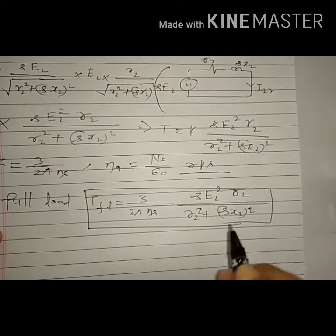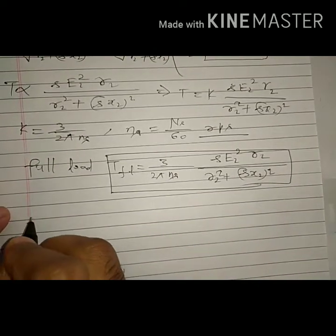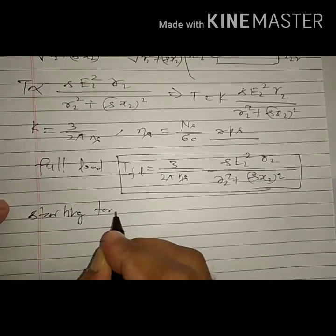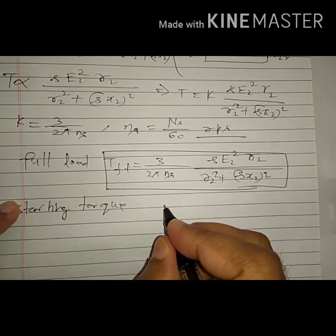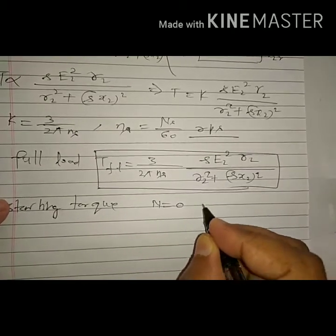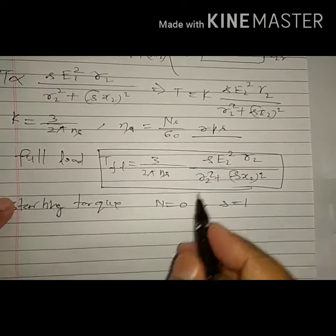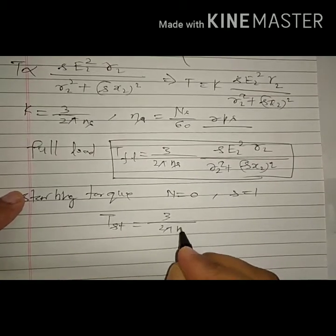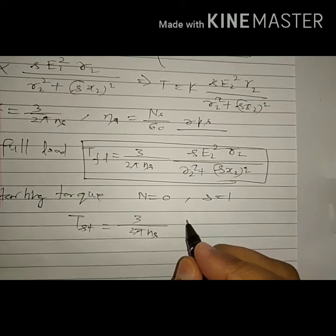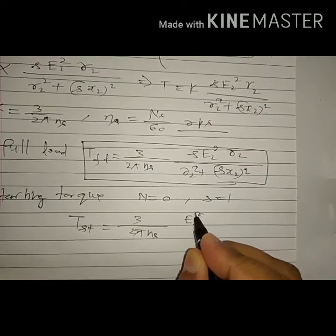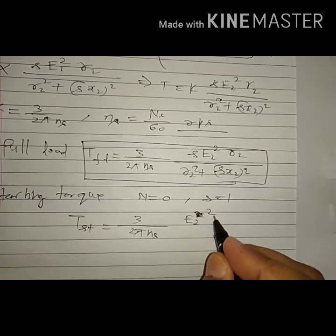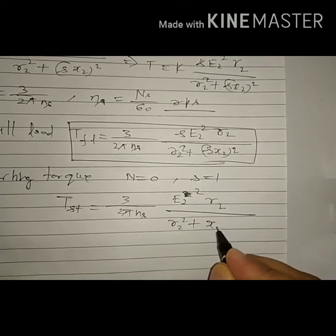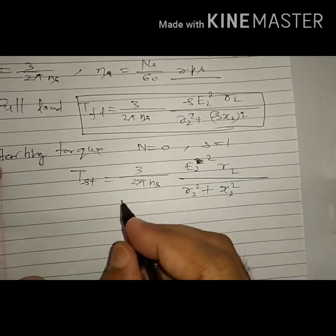For starting torque, at start the speed is zero, so slip s equals 1. Substituting slip = 1 into the torque expression, starting torque TST = (3 / (2*pi*ns)) * e2² * r2 / (r2² + x2²). This is the expression for starting torque.